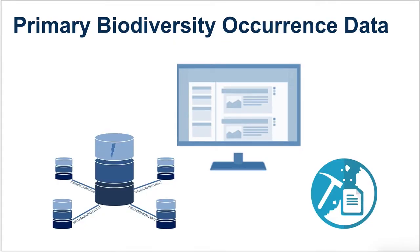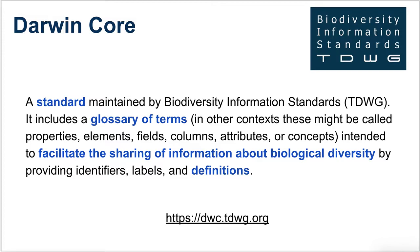We're supposed to cover primary biodiversity occurrence data in this talk, and we should probably be sure that we're talking about the same things. A good way to do that is to use the definitions that are standard in the community for sharing data, and those are the ones given in the Darwin Core Standard, which is managed by Biodiversity Information Standards, TDWG. Darwin Core is more or less a glossary of terms and their definitions that facilitate the sharing of information about biological diversity, and those definitions are well-known and should be understood across the community.